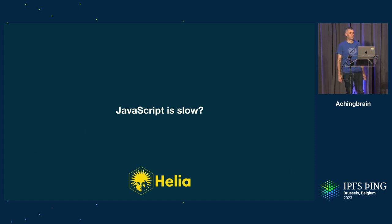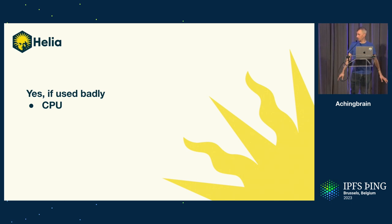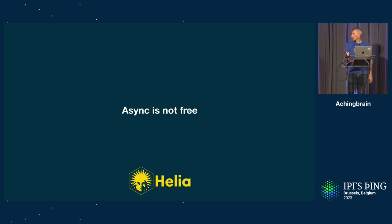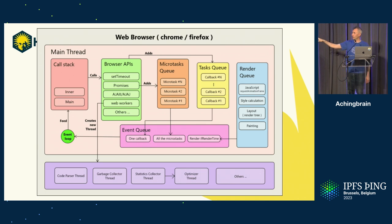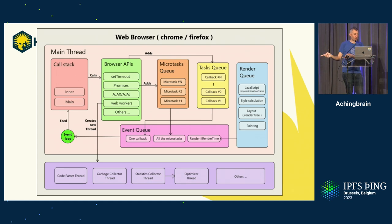JavaScript is slow, right? It can be if you use it badly. There are things it's really bad at, like CPU-intensive tasks — awful, the worst. Don't do it if you can help it. But async is also terrible — async is not free. We have to remember this. This is a picture of the browser event loop. The really important thing to notice is when you're calling browser APIs and you see promises — every time you invoke a promise, an item gets added to the microtask queue, and this is incredibly expensive when you're doing stuff in a very hot loop.